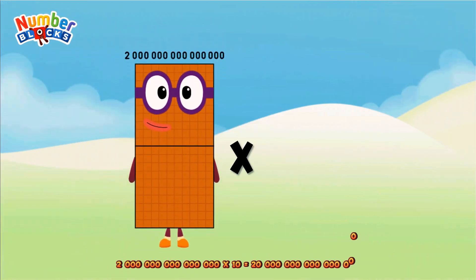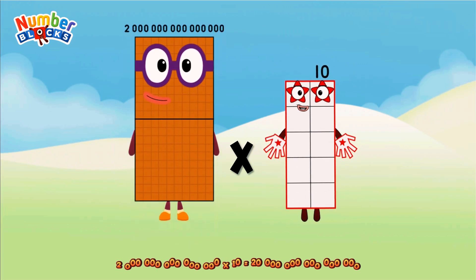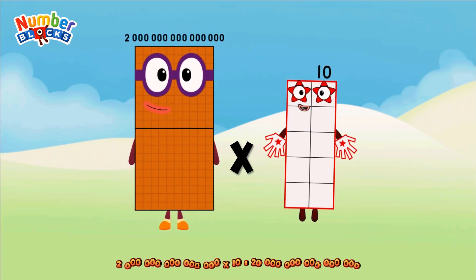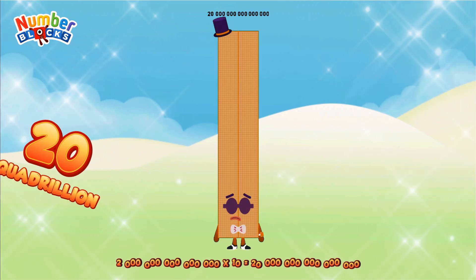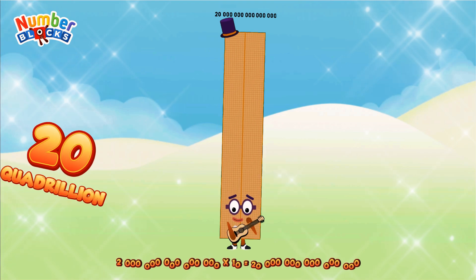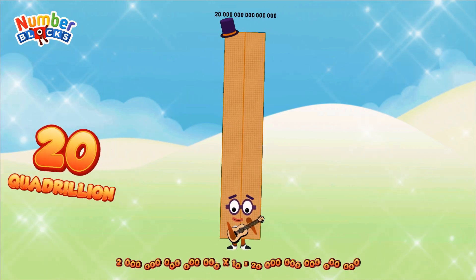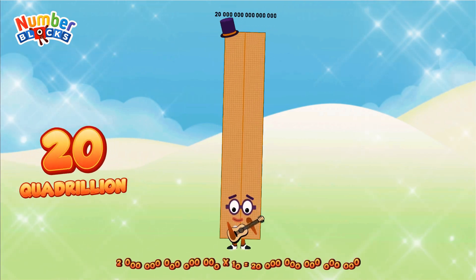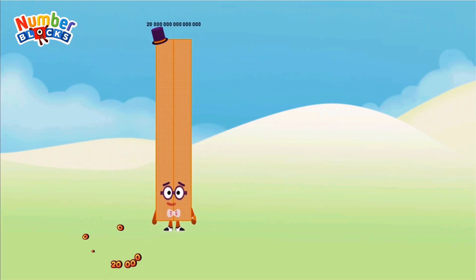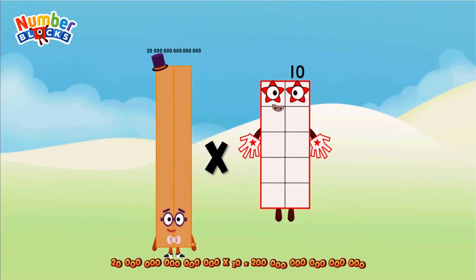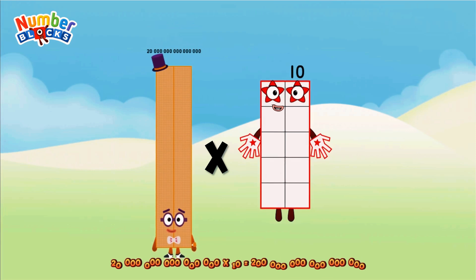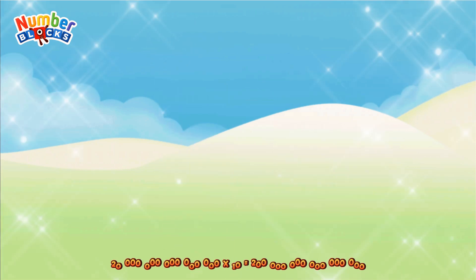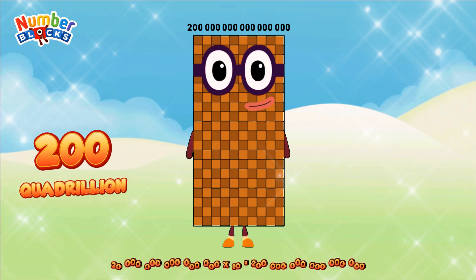Two quadrillion, multiplied by ten, equals twenty quadrillion. Twenty quadrillion, multiplied by ten, equals two hundred quadrillion.